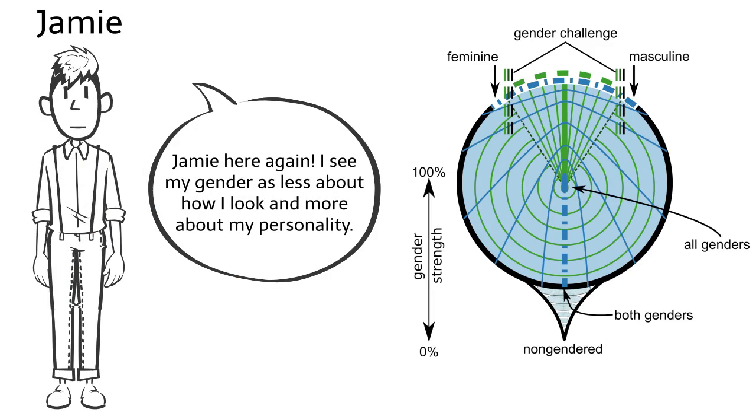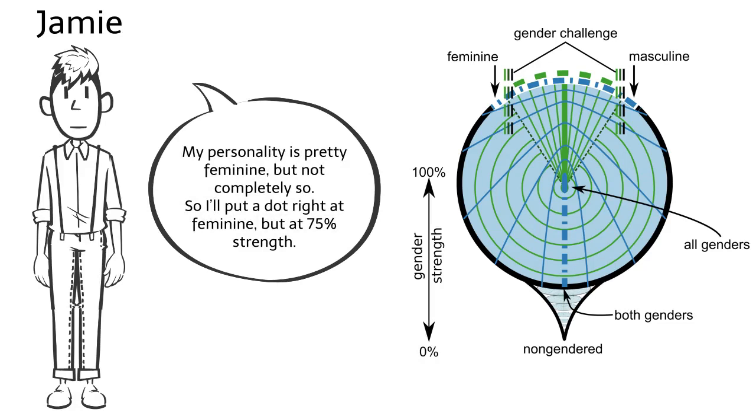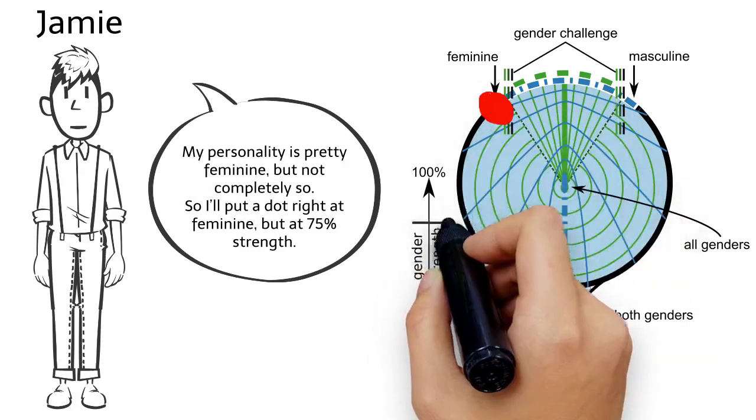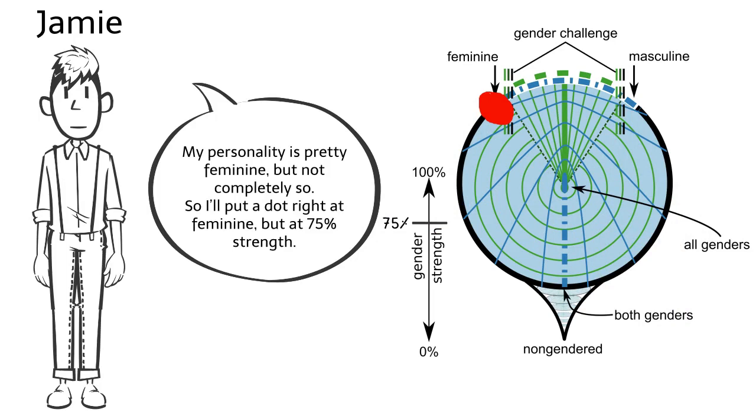Jamie here again. I see my gender is less about how I look and more about my personality. My personality is pretty feminine, but not completely so. So I'll put a dot right at feminine, but at 75% strength.